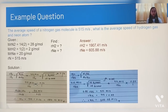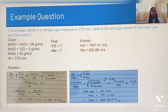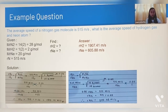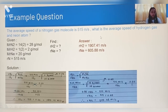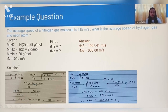Example question number 1. The average speed of a nitrogen gas molecule is 515 meters per second. What is the average speed of hydrogen gas and neon atom? First, we need to find the given from the question. The average speed of a nitrogen gas molecule is 515 meters per second, so R(N2) is 515 meters per second.